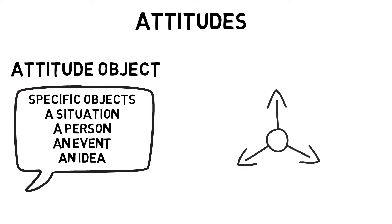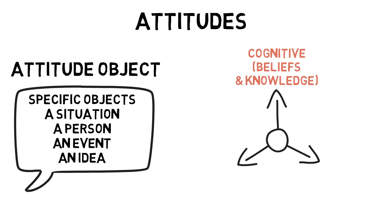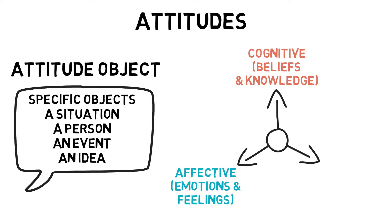The components that make up attitudes are made up of a triadic model. The cognitive component reflects our belief, knowledge, and thoughts, such as playing sport keeps me fit and healthy. The affective component reflects our emotions and feelings, such as I enjoy playing sport. And the behavioural component reflects our intended or actual behaviour, such as I participate in sport regularly.